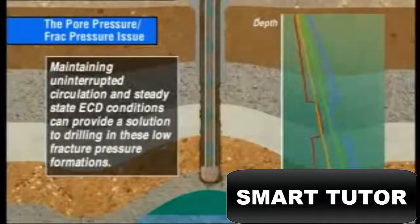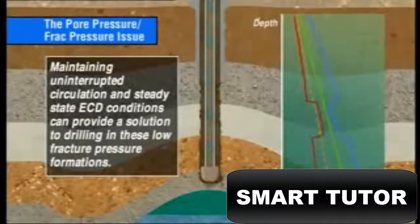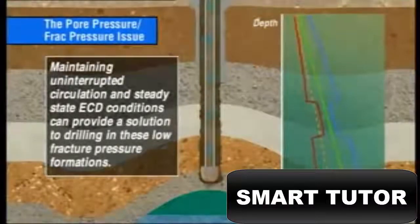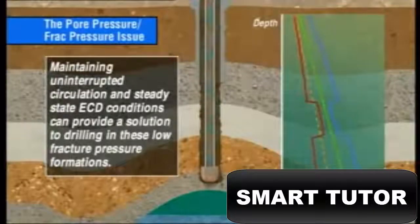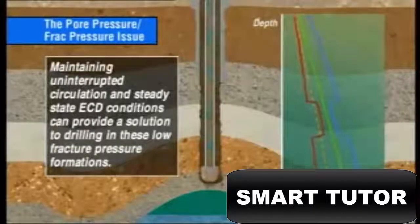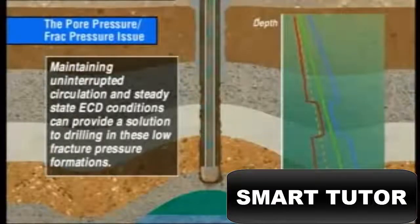Maintaining uninterrupted circulation and steady state ECD conditions can provide a solution to drilling in these difficult formations. Drilling with the continuous circulation system may be the only way to achieve the planned target depth of the well. With the CCS, walking the line can be more tightly controlled than with traditional stop-start drilling technology.